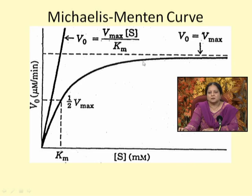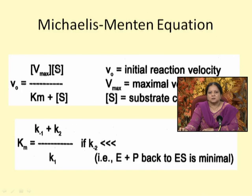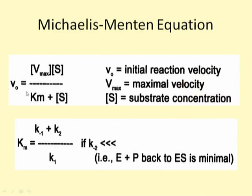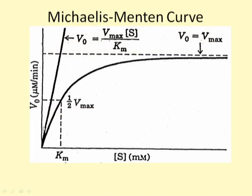In the middle part of the graph, the reaction is of mixed order and the full equation is obeyed. Approximating the Michaelis-Menten equation at very low substrate concentrations, we can ignore S in the denominator, and the equation becomes V0 equals Vmax over Km times S — so it goes like a straight line, V0 equals Vmax/Km times S.